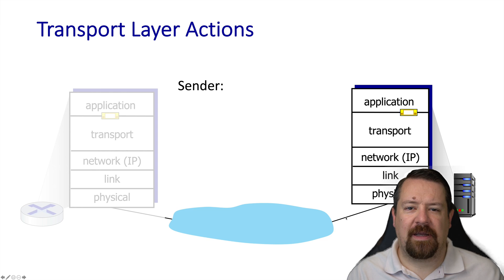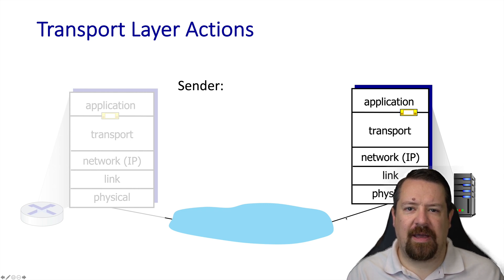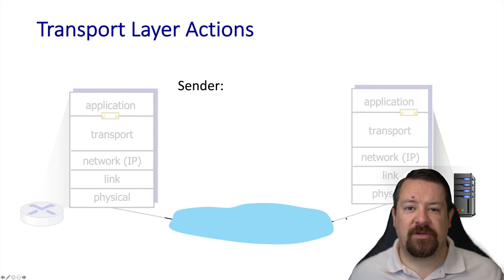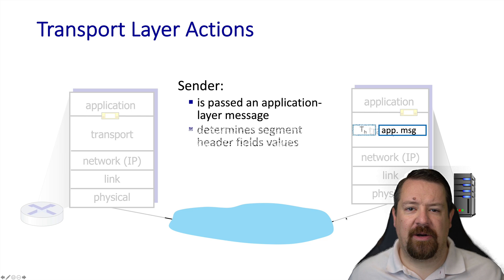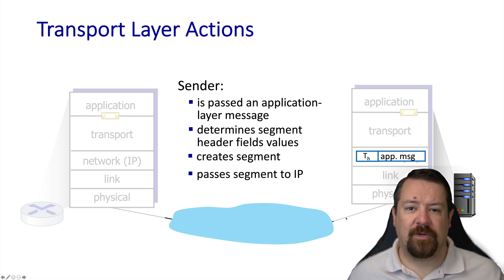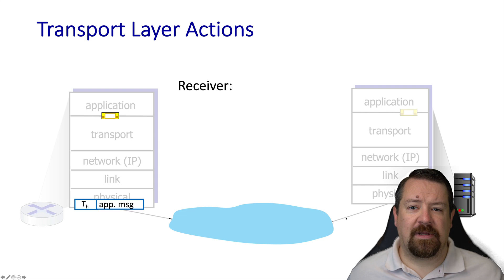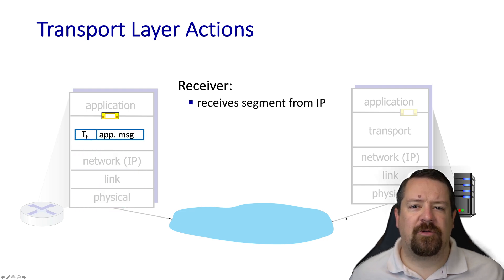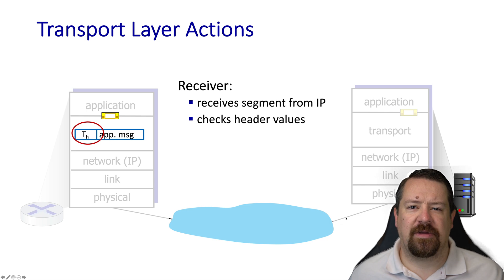To quickly review the network layering: we have the application layer, which we discussed in the previous chapter, sitting on top of the transport layer, which we're discussing now, which sits on top of the network layer, which will come next. Below that are the link and physical layers. The transport protocol starts by receiving a message from the application, determines the transport layer header, and the header and payload together form a segment. That segment is passed to the IP, or network layer, to be encapsulated in a packet, then delivered to the host on the other end. The network layer delivers that segment up to the transport layer, which reads the header values to determine what application to deliver the message to, removes the header, and passes the message up to the application via the socket.